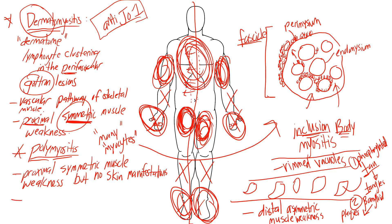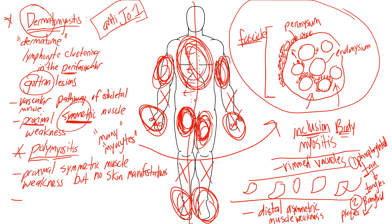I hope these tips helped clear up some of these points. Going back over the structure of muscle helps clarify what 'perifascicular atrophy' and 'lymphocyte clustering around the endomysium' mean. Dermatomyositis has the word 'dermatome' in it — that links to Gottron lesions as skin lesions, symmetric proximal muscle weakness, and perifascicular lymphocyte clustering, because a dermatome is a whole unit of skin just like a fascicle is a whole unit of muscle.